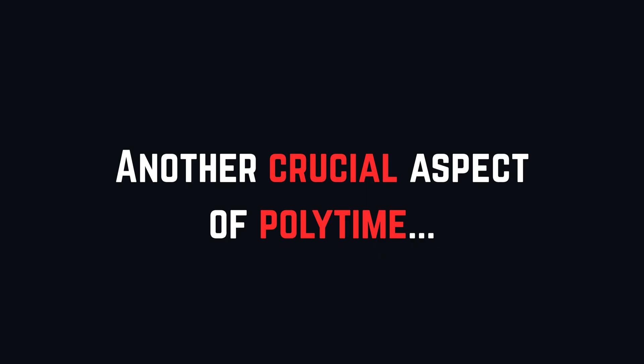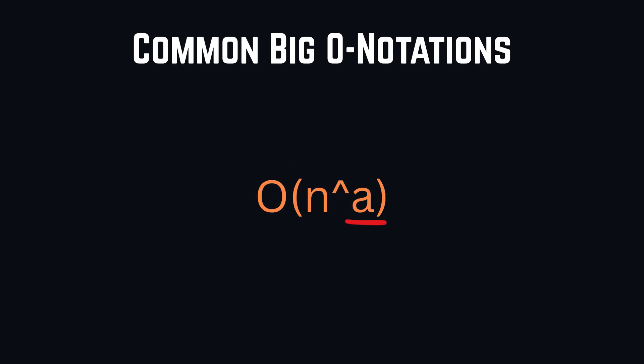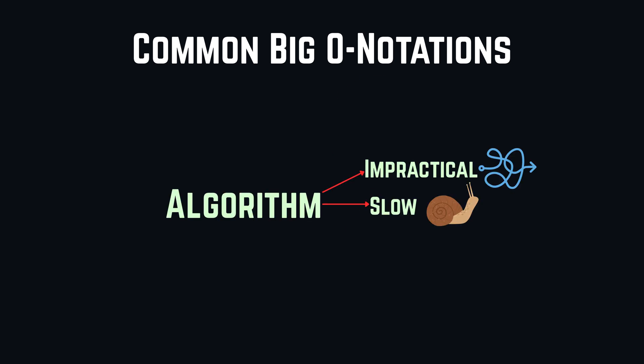Another crucial aspect of polynomial time is the size of the constant A. If the constant A is large enough, it can make an algorithm go from highly efficient to impractical, slow, and useless.